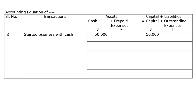Transaction one: started business with cash rupees 50,000. Cash comes under the head assets and capital comes under the head capital. Rupees 50,000 equals rupees 50,000.